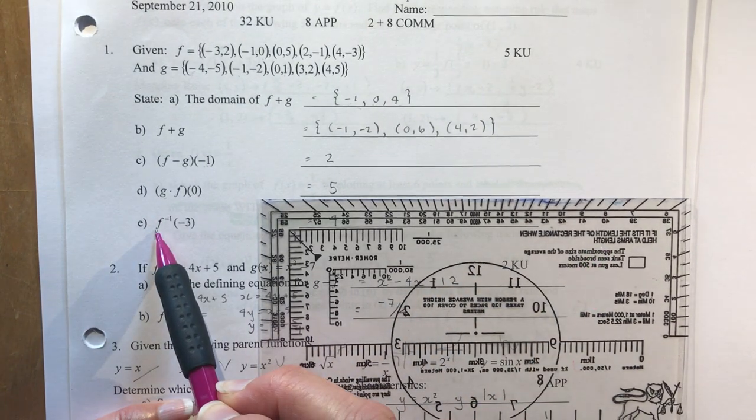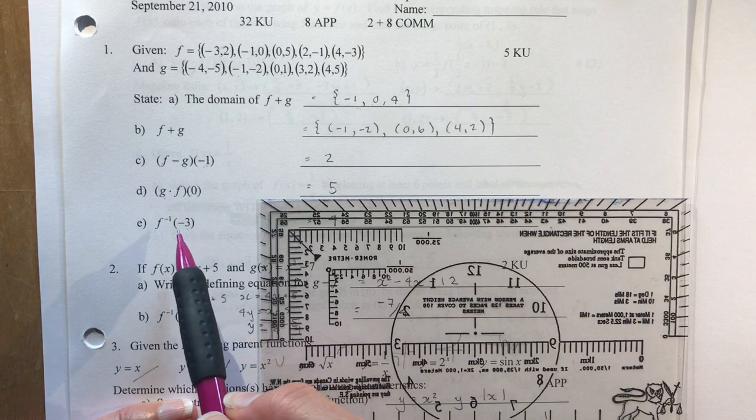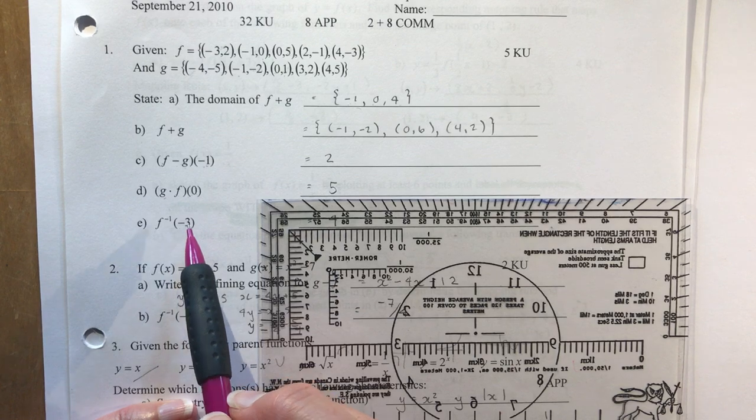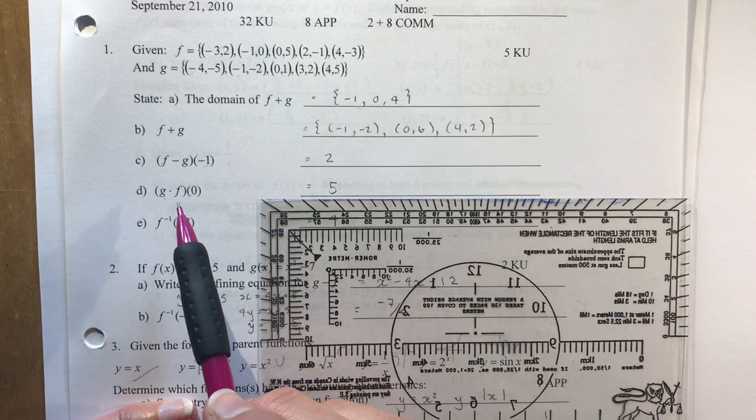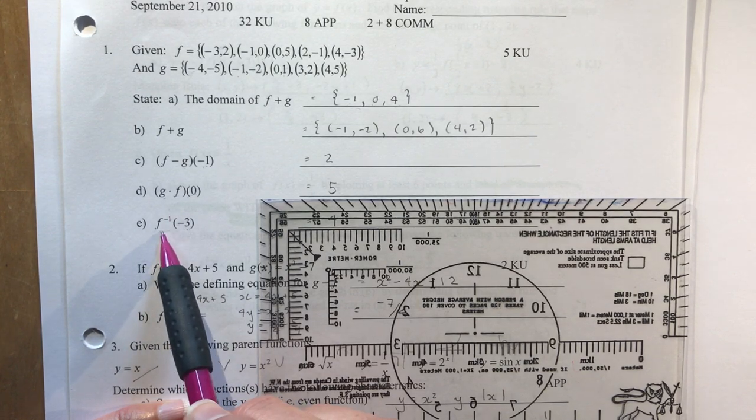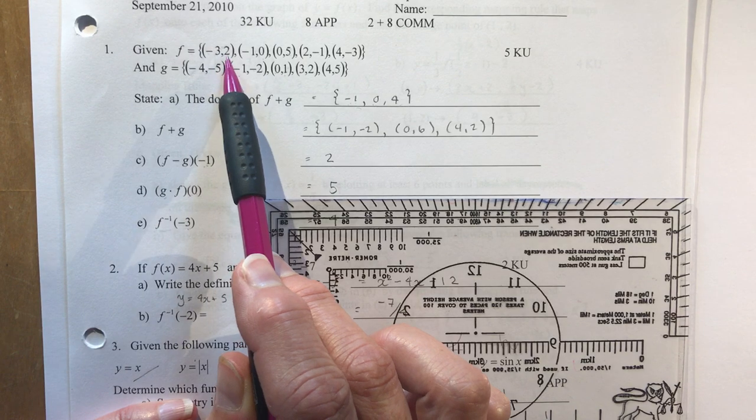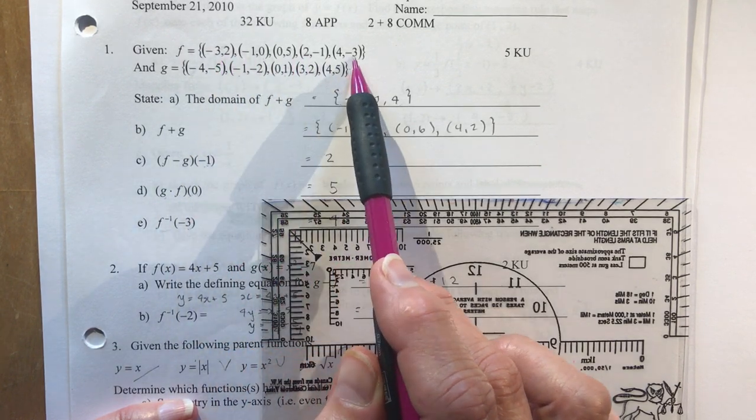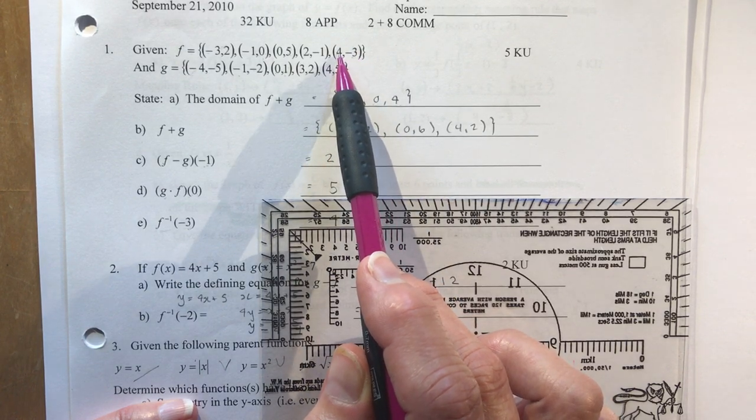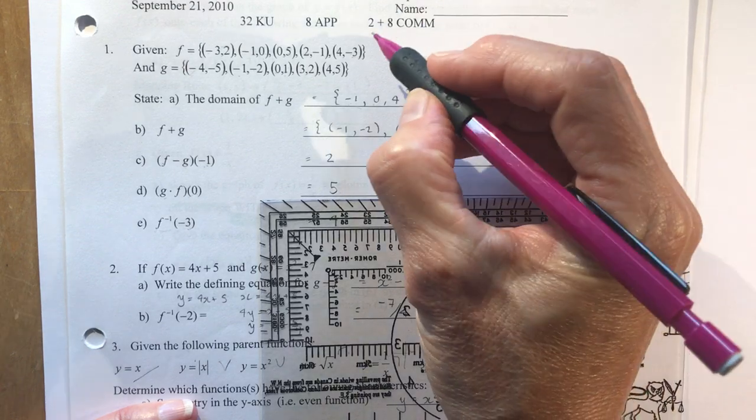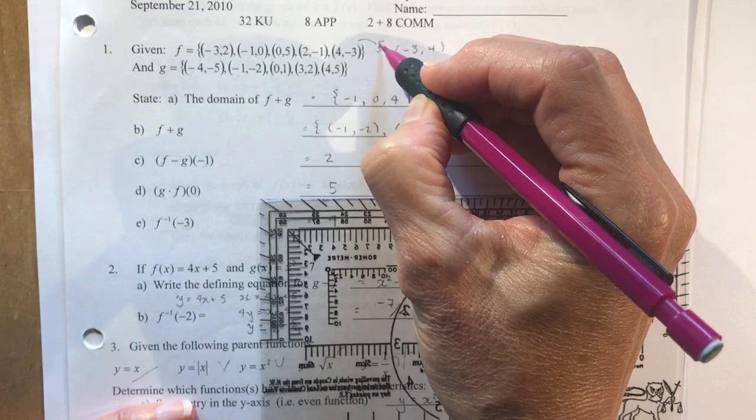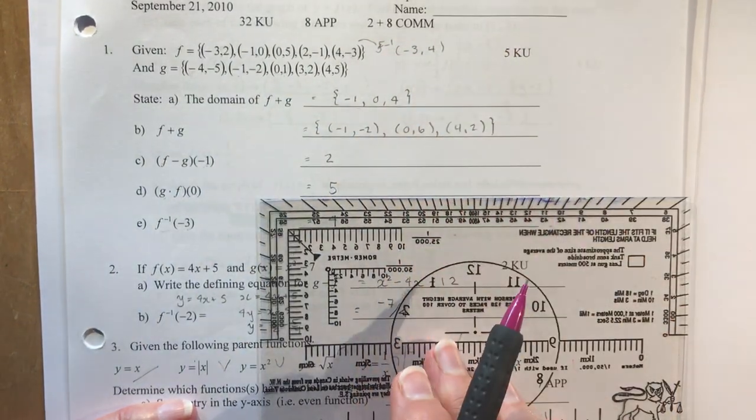At zero, we have five and one for our y coordinates. So multiply them together and you get five. f negative one at minus three. Okay, so it wants to know what is the inverse at minus three. So I need to know where do I have minus three for my y coordinate for the function f. This isn't a multiplication or anything. So I only have to look up here. So when the y coordinate is minus three, that would be here. So that means that x would be four.